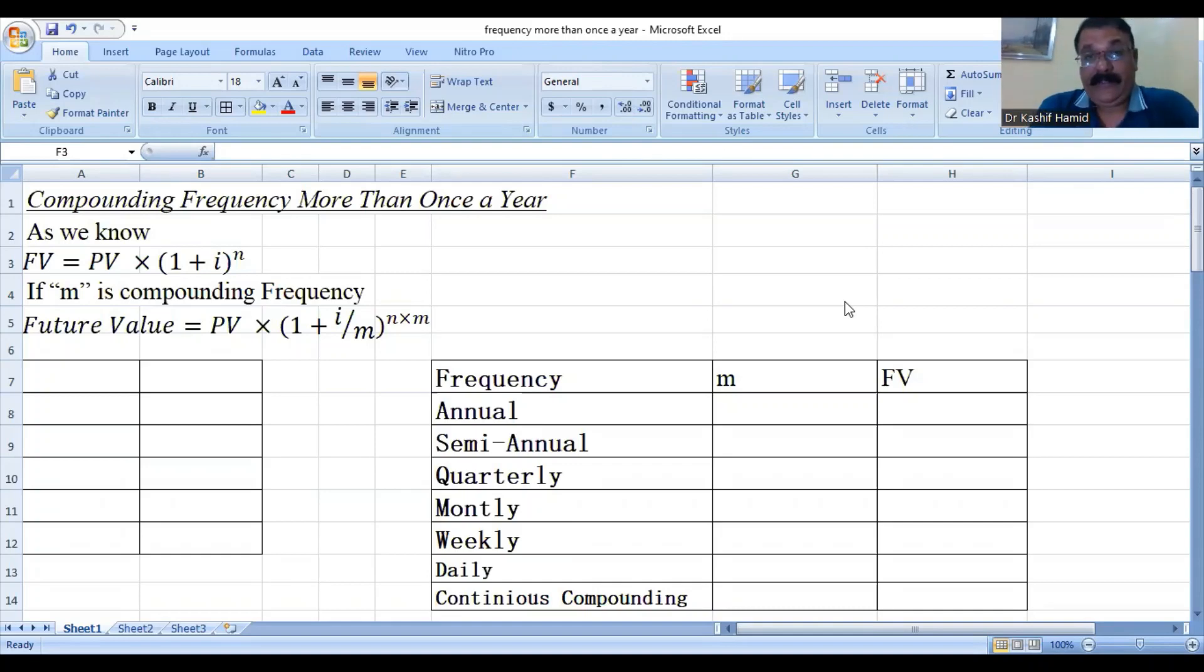then future value will be equal to present value multiplied 1 plus i divided by m whole power n multiplied m. m is here introduced because as we will increase the frequency from annual to daily computation, then we will put the values of the relevant frequencies in the computation in the formula of the future value.